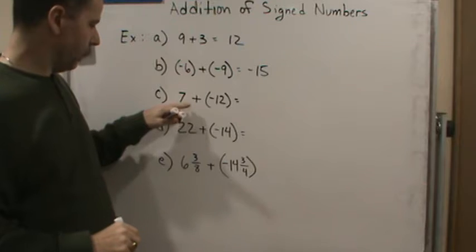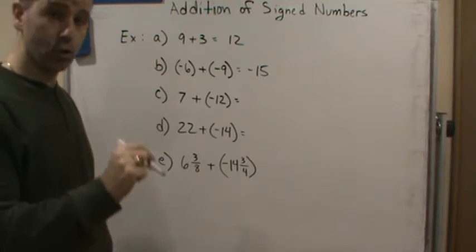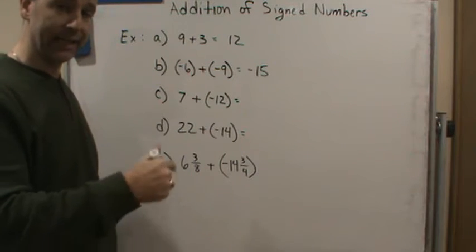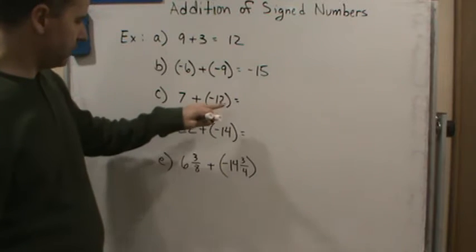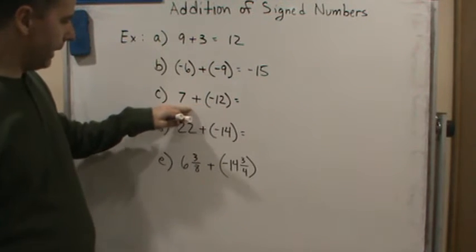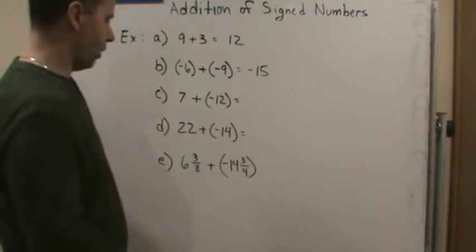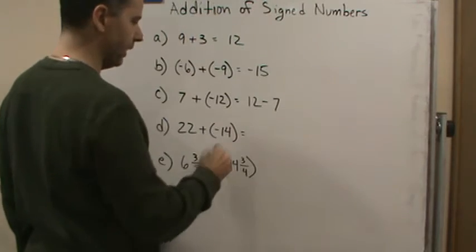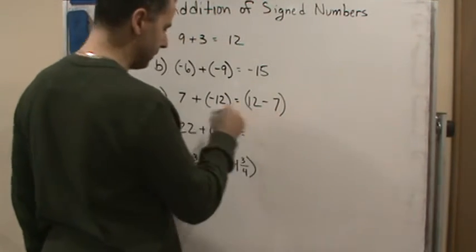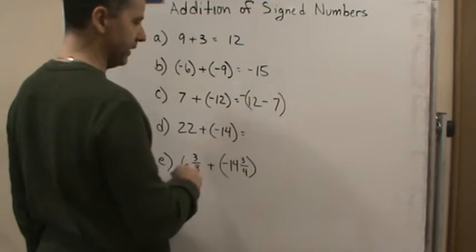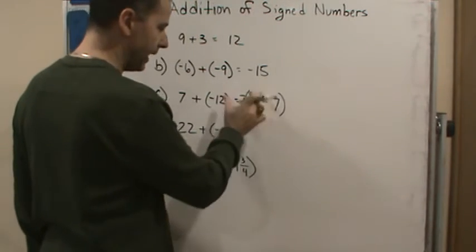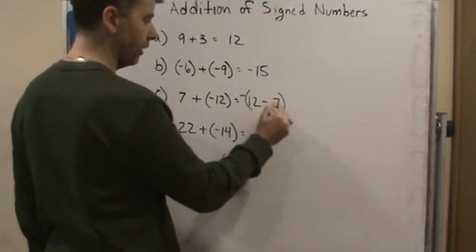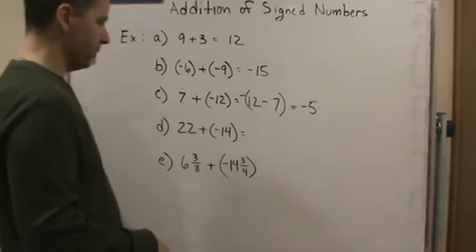Now here they're opposite signs. That means I'm going to subtract the absolute values and keep the sign of the larger number. So I'm going to subtract 12 minus 7. I'm thinking in my head: 12 minus 7, and then I'm keeping the sign of the larger one, so it's going to be negative. So this gives me negative 5.